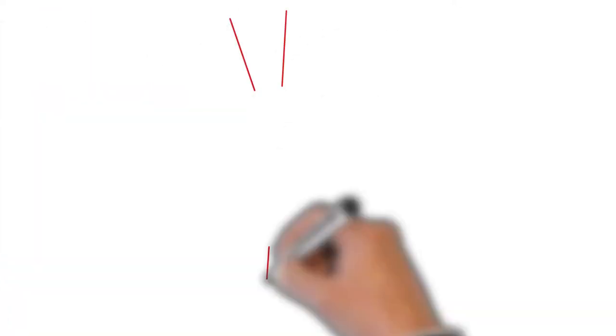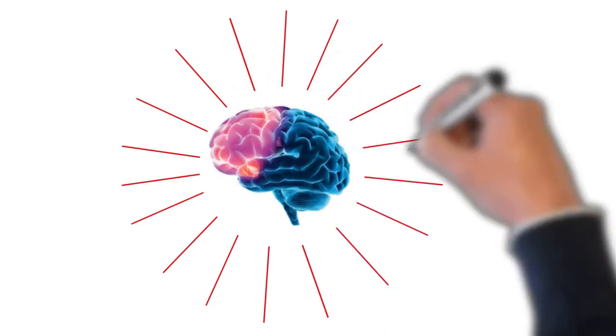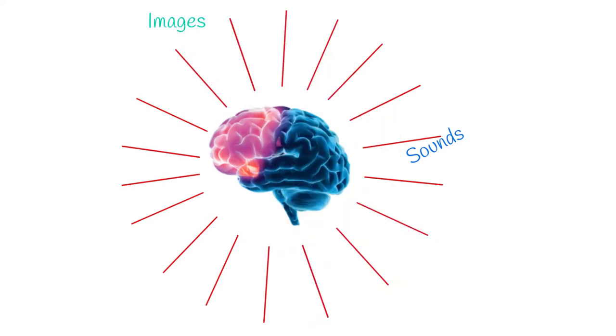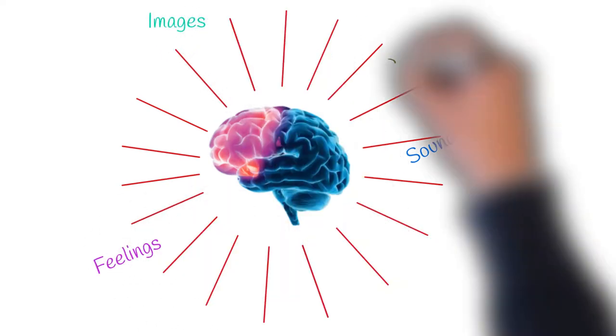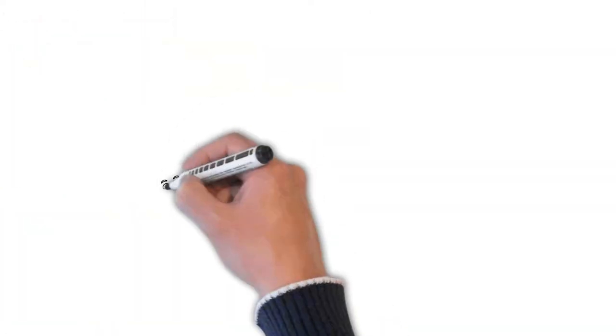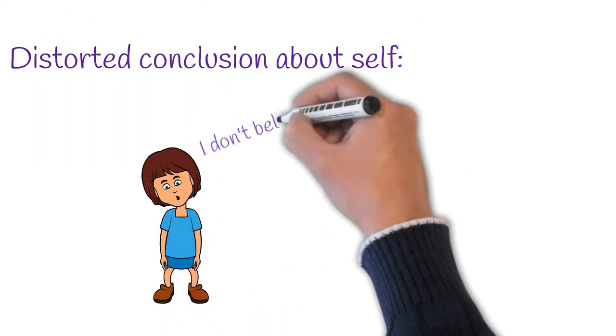When these things happen, sometimes they do not get processed and they are stuck in the brain with the same sounds, pictures, sensations, and feelings that you had at the time of the really tough experiences. Sometimes when things happen and they are not processed through, this can lead to distorted conclusions about the self.